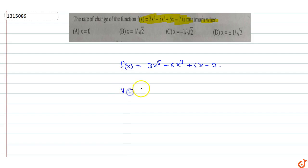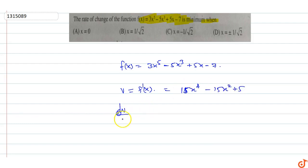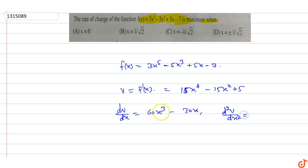The rate of change is f'(x), which equals 15x⁴ - 15x² + 5. Let v = f'(x). Now differentiating dv/dx gives 60x³ - 30x. Then d²v/dx² = 180x² - 30.